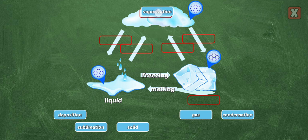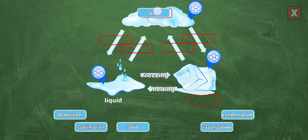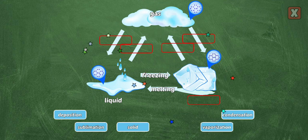Vaporization. In a gas, molecules are hotter, looser, and move faster. For example, steam is a gas.